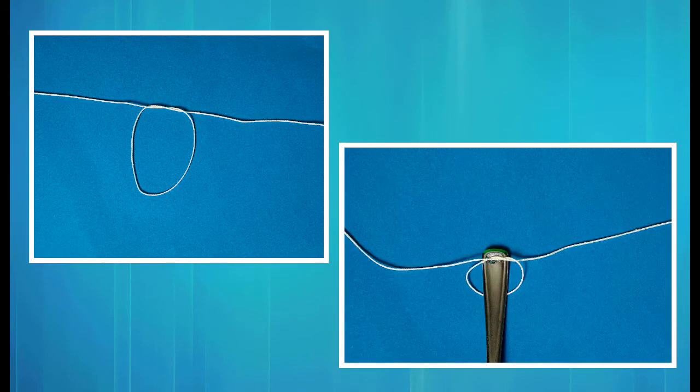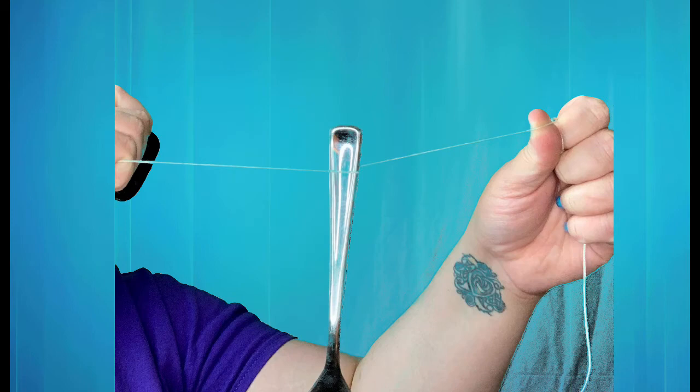Create a loop in the middle of the yarn or string and insert the handle of the spoon. Pull tightly so that the spoon hangs in the center of the string and you have about two feet on each side of the spoon.